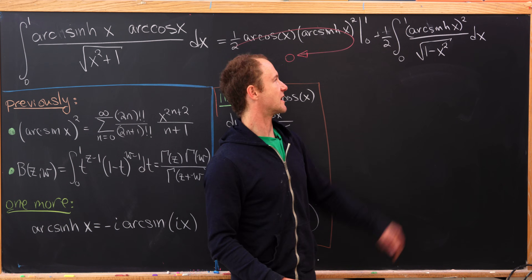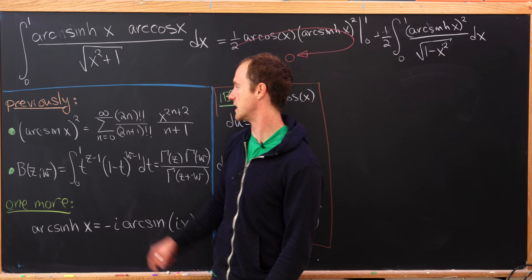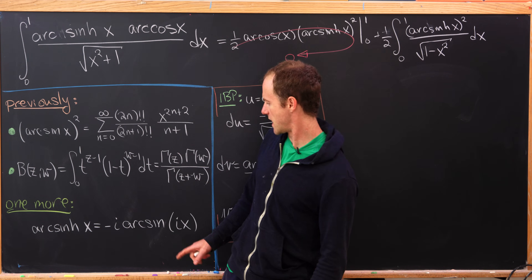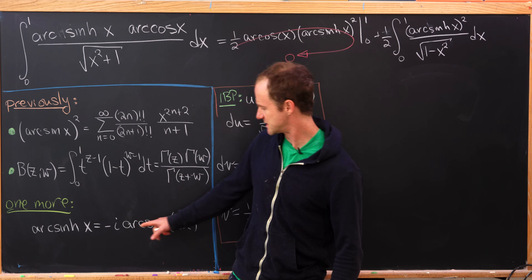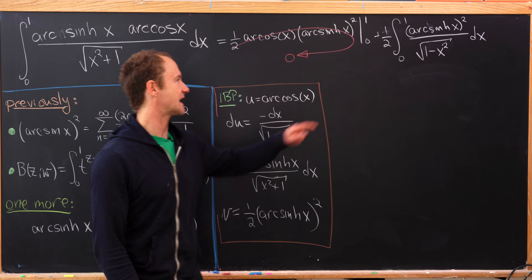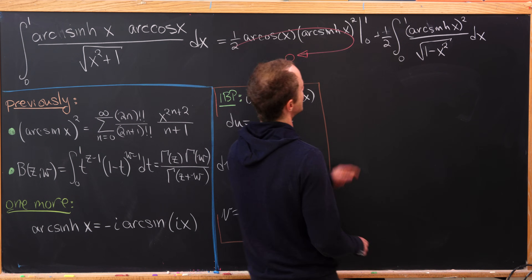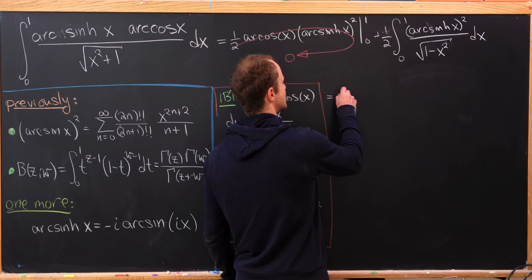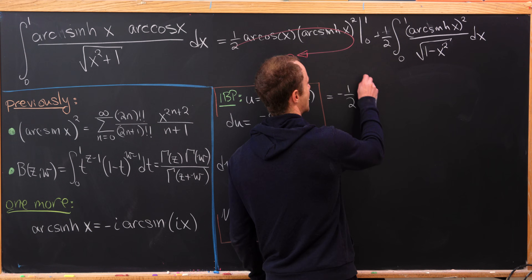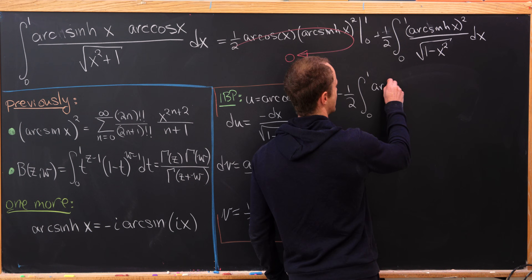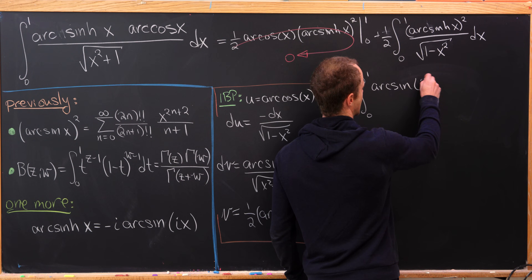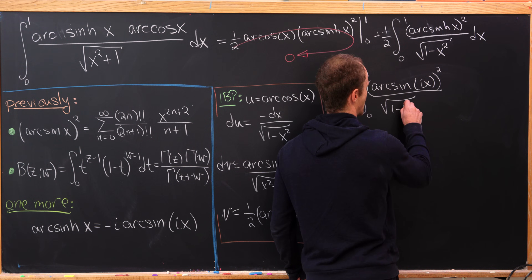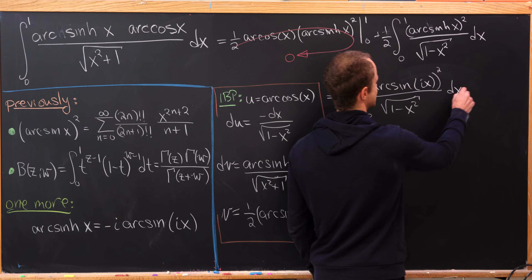Now we replace the inverse hyperbolic sine with the regular inverse sine using our identity. Since both are squared and we have an i in the argument, the i squares to negative 1, turning the plus one-half into a minus one-half. So this gives us minus one-half times the integral from 0 to 1 of the regular arc sine evaluated at ix, squared, over the square root of 1 minus x squared, dx.